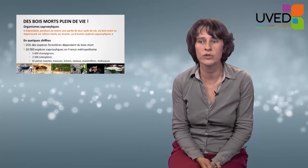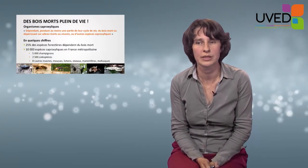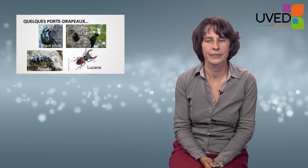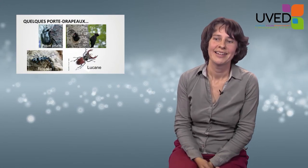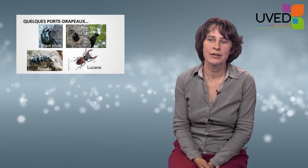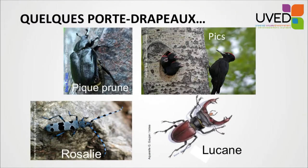In continental France, we have approximately 10,000 saproxilic species: thousands of fungi, 2,500 beetles, but also birds, mammals, and more. Among the most famous ones, we have woodpeckers, which live in natural cavities on old hardwood trees.